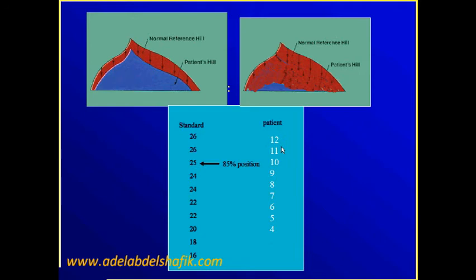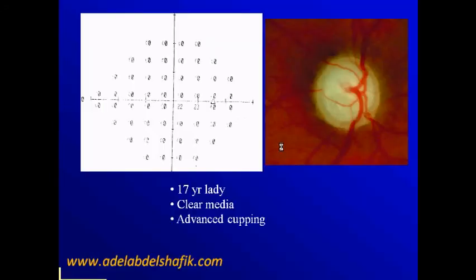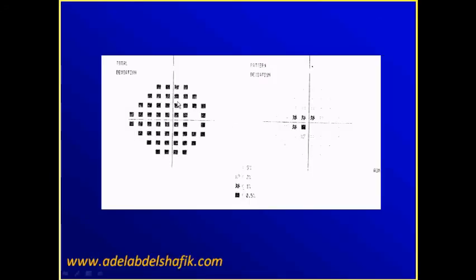So don't take it for granted to say if you get total deviation here means media opacity, and if you have here no changes it means there is no local effect. It's not always like that. This is what we do in most of the cases. If you have the total deviation affected, you say this is due to media opacity, corneal opacity, lens opacity. If the same dots disappear from the pattern deviation, you are sure it's just the total opacity of the media. If the remaining some points stayed here in the total deviation, you say this is an actual local defect. This is in most of the cases right, but it can be wrong as in this example.